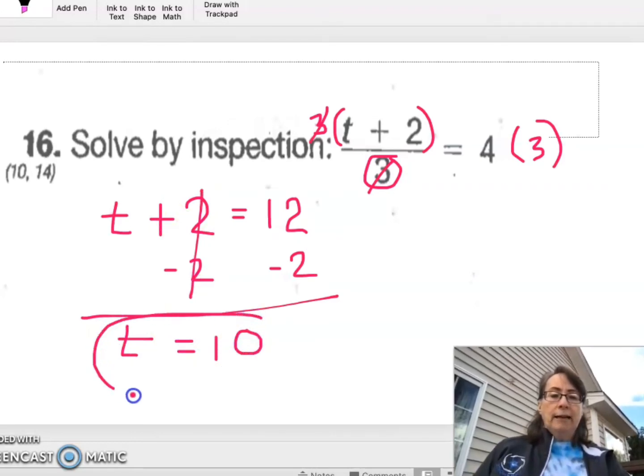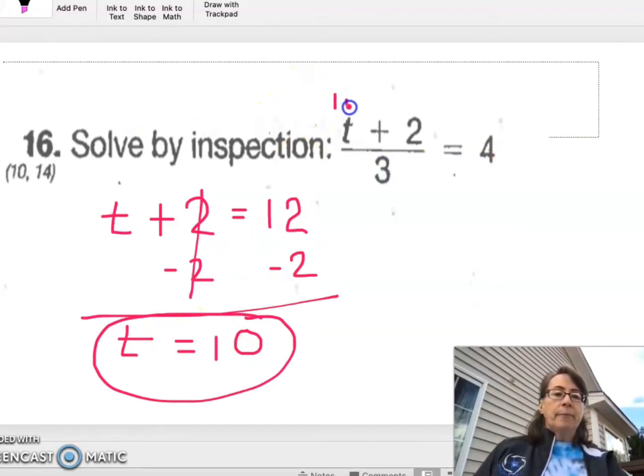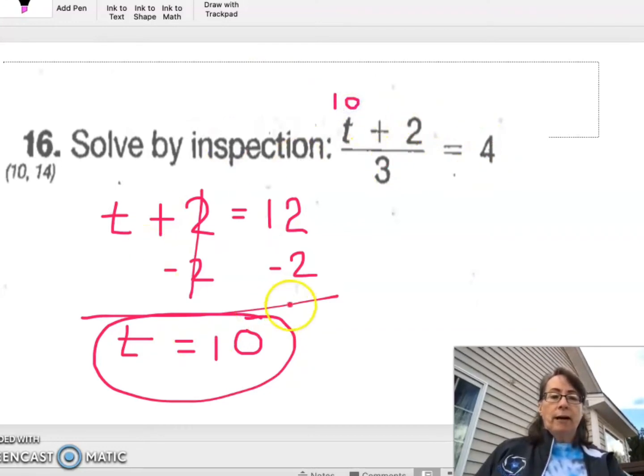Now, to check it, I'm going to go back to the original equation and plug in the 10. 10 plus 2 is 12. Divide by 3 is 4. And it checks.